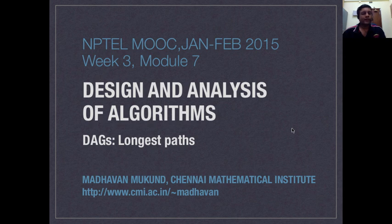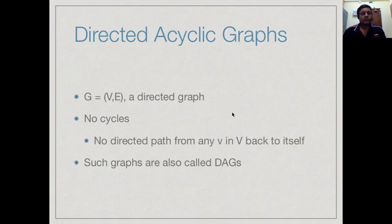Let us continue to look at DAGs. In this section we will look at a different problem called identifying the longest path in a DAG. Recall that a directed acyclic graph is a directed graph in which there is no directed path from any vertex back to itself — so it is directed and it is acyclic.